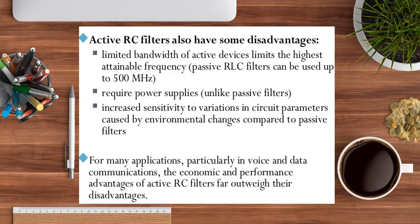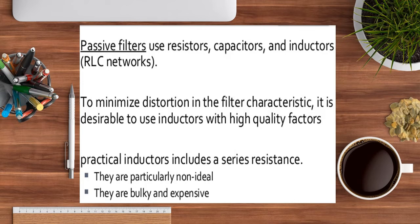Limitations of active filters include a limited bandwidth of active devices — up to 500 MHz — a requirement for a power supply, and increased sensitivity to variation in circuit parameters. Passive filters using RLC — resistors, inductors, and capacitors — minimize distortion in filter characteristics. However, they require high-quality inductors, and inductors are bulky and expensive, which are practical drawbacks.